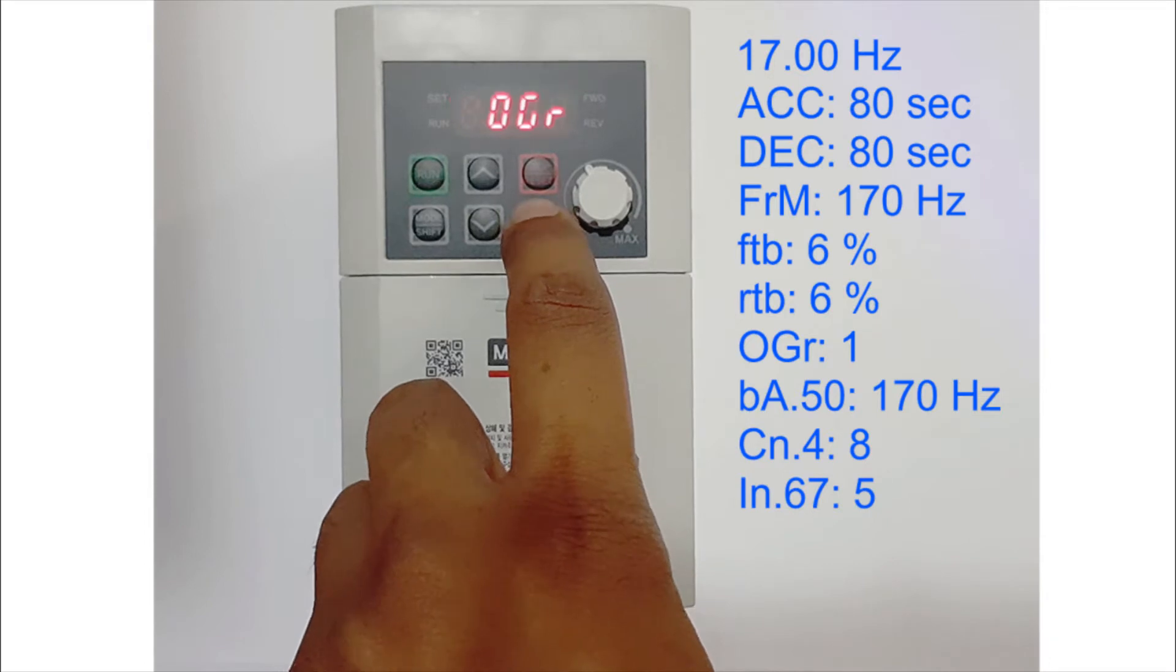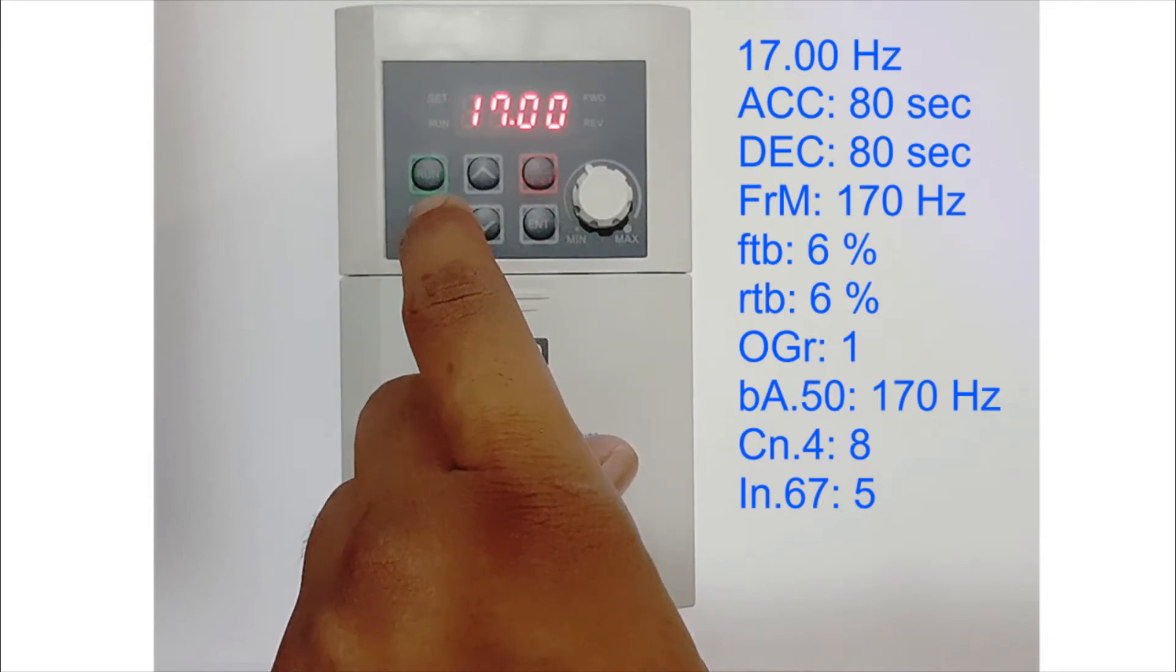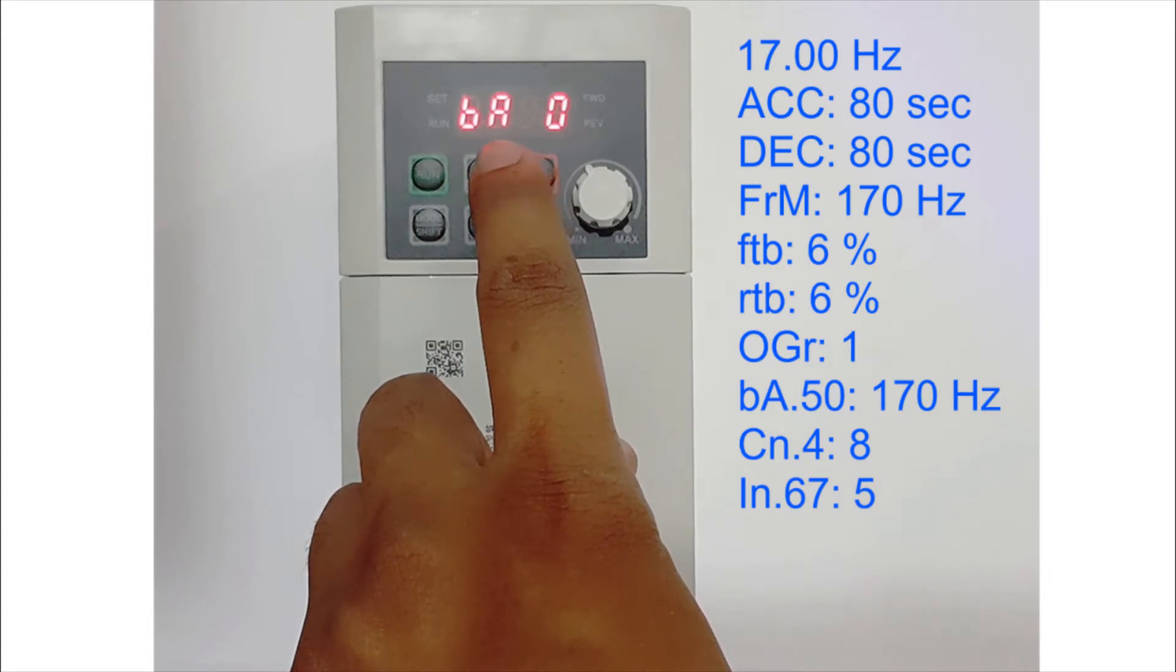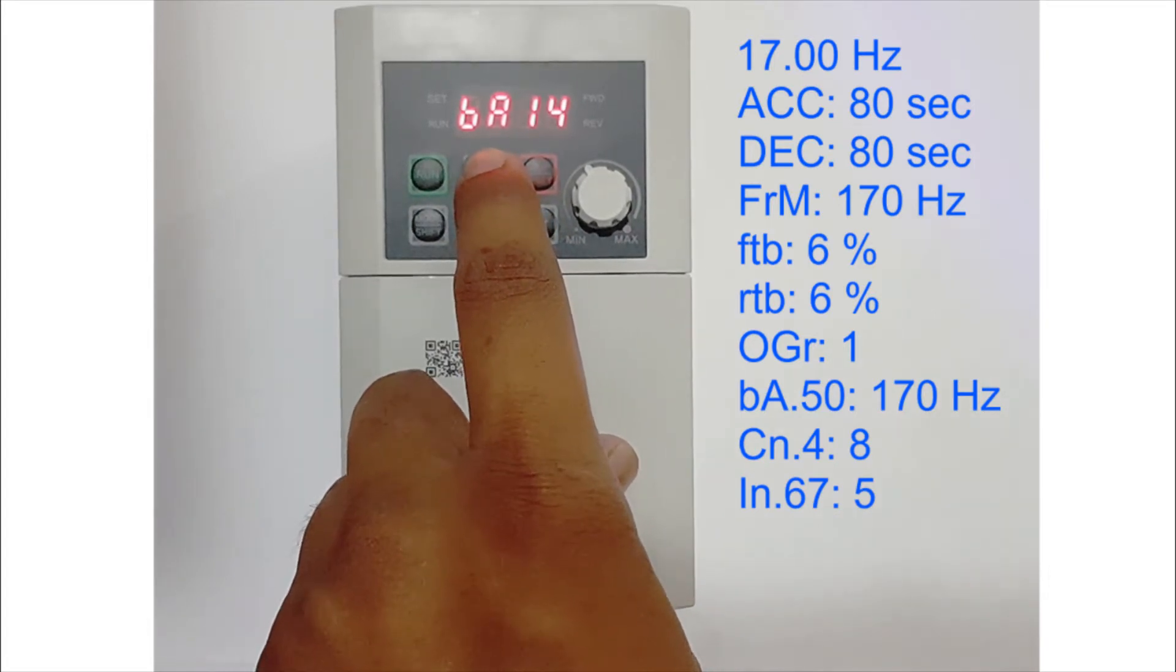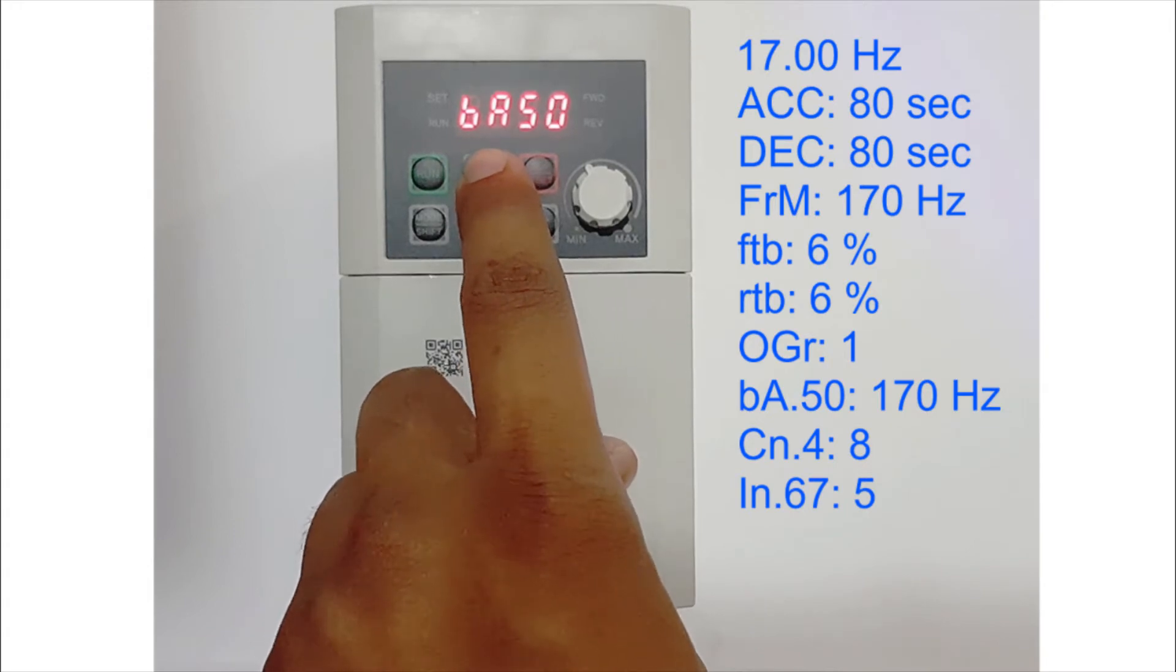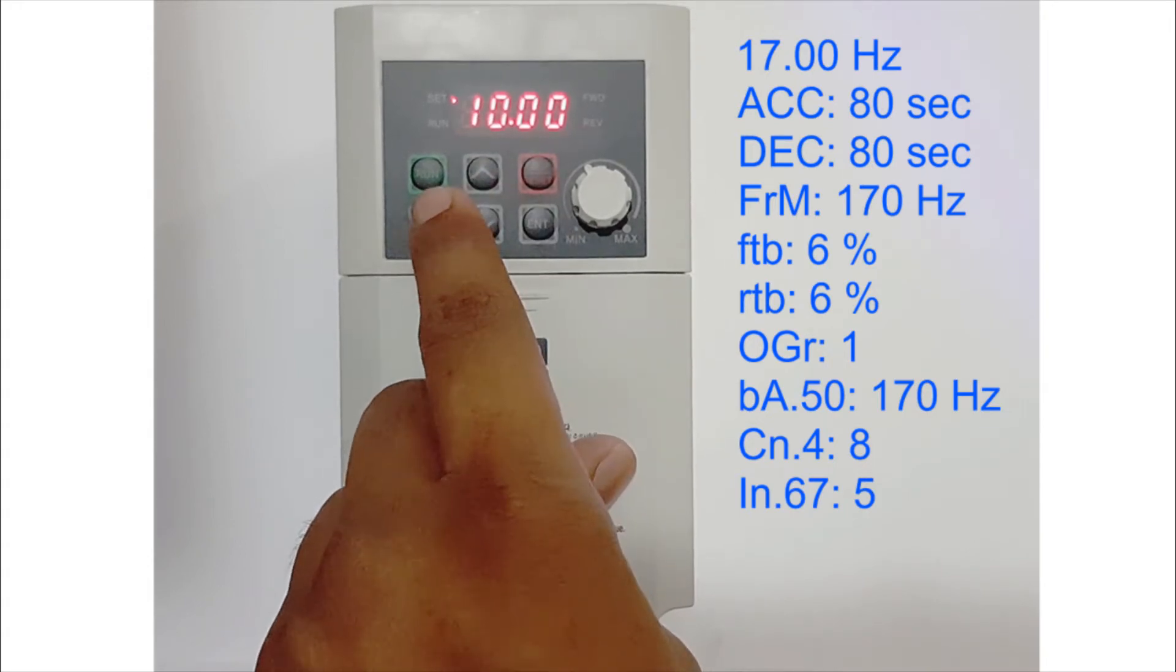In BA, I will go to BA number 50 and make it as high speed 170, press Enter two times, then press Shift again and again.